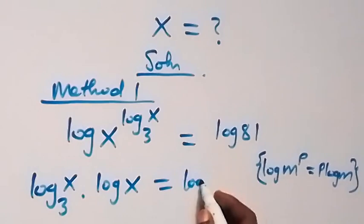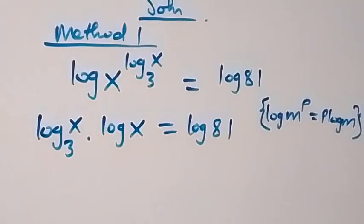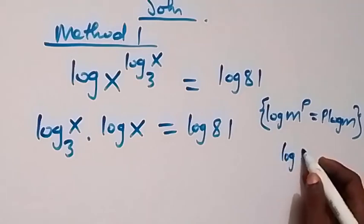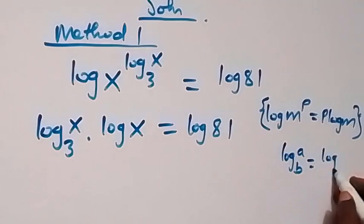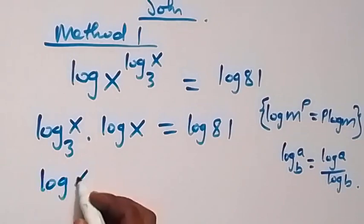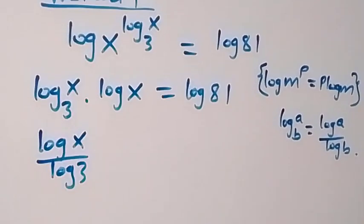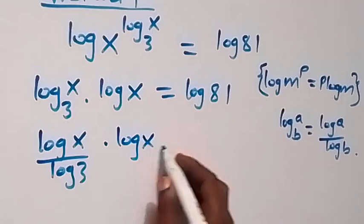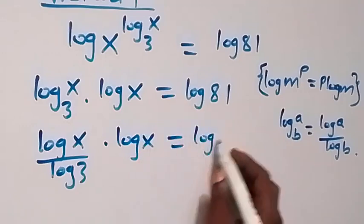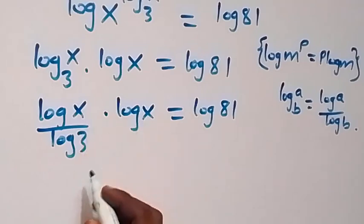This becomes log x base 3, times log x, equals log 81 on this side. In the next step, we can rewrite using the change of base formula, where log a base b is the same as log a over log b. So we write this as log x over log 3, then multiply by log x, equals log 81.